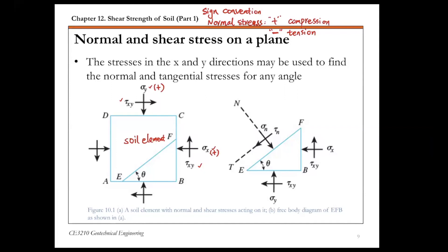For shear stress, the sign convention is that positive shear stress produces counterclockwise rotation. Looking at the soil element, for the horizontal plane DC, the shear stress tau xy creates a clockwise rotation, so by our sign convention this is negative shear stress. The tau xy on the vertical plane CB produces counterclockwise rotation, and this by our sign convention is also negative shear stress.